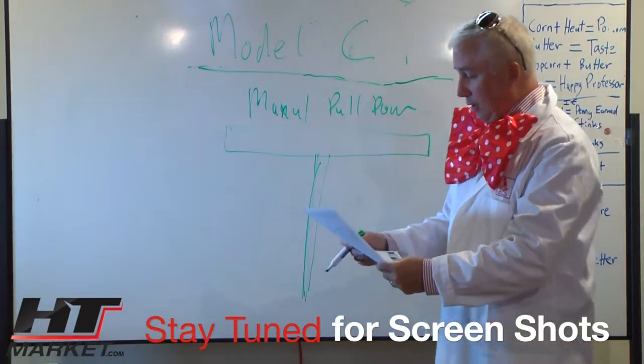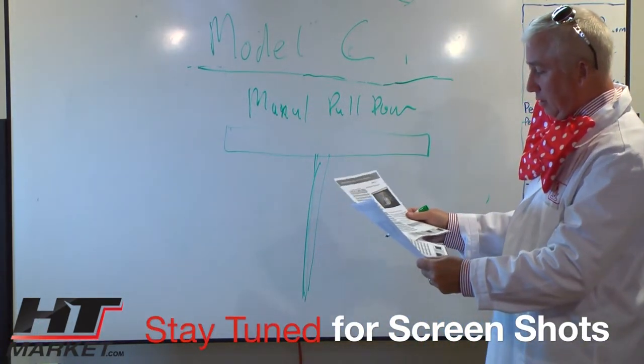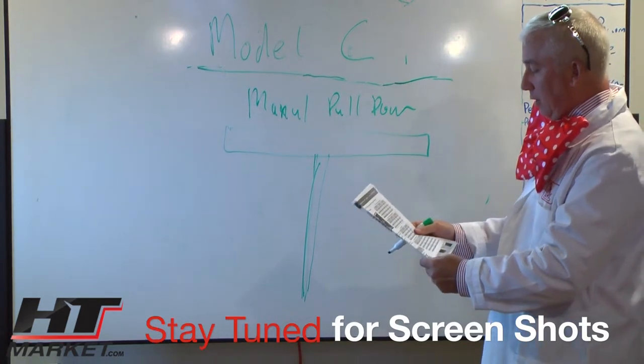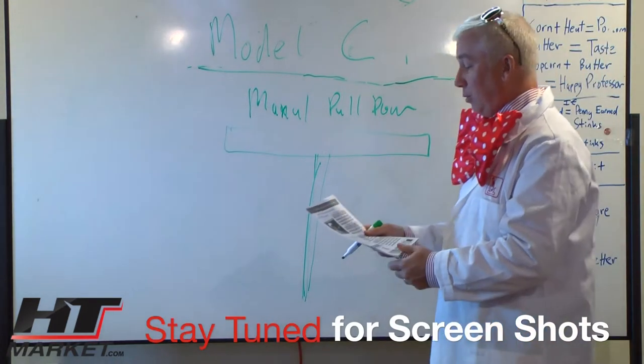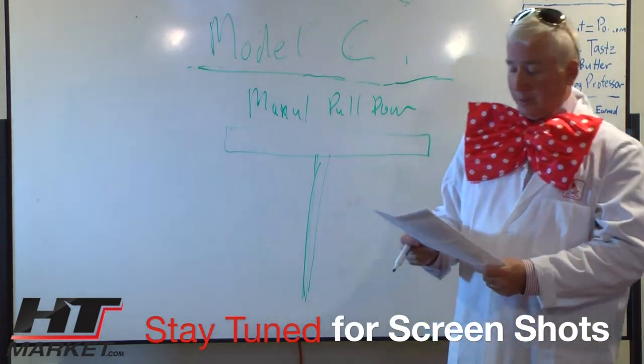Anyhow, htmarket.com recommends the Model C. But if you're going to go Model C and you're not going to go with the electric screen, I think you should go with the CSR. Not CSI.